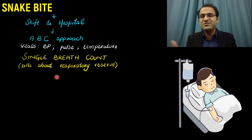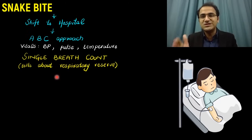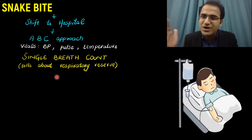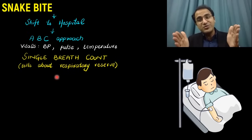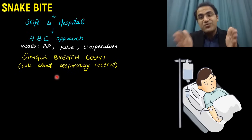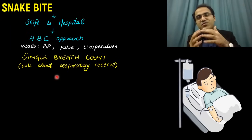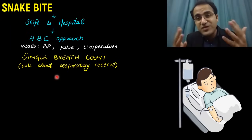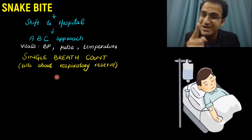The patient takes a single breath and counts aloud — a normal person can count up to 30 in a single breath. If the patient can only count up to 20, it means they are progressing toward respiratory paralysis. If the patient can only count up to 15 in a single breath, their respiratory reserves are going down and this patient will need a ventilator.